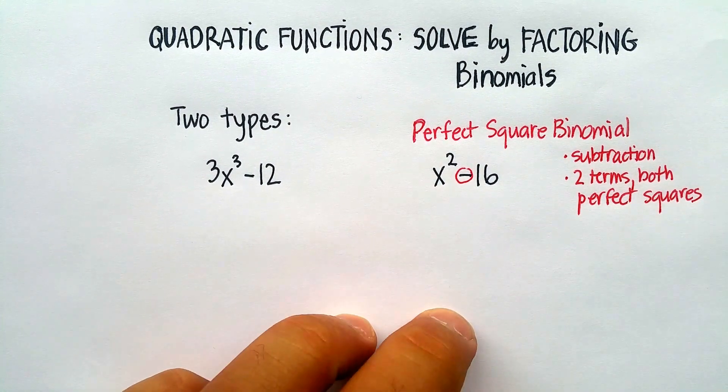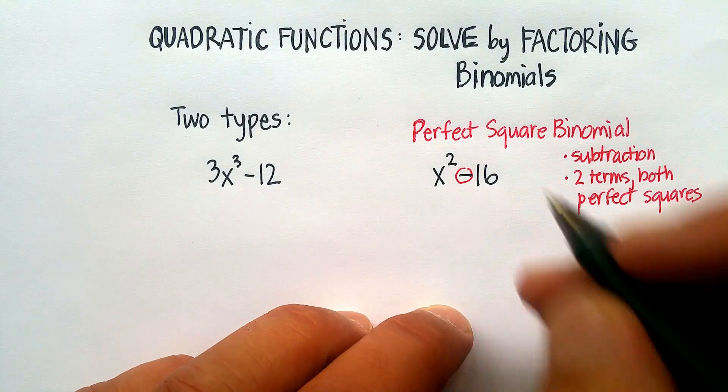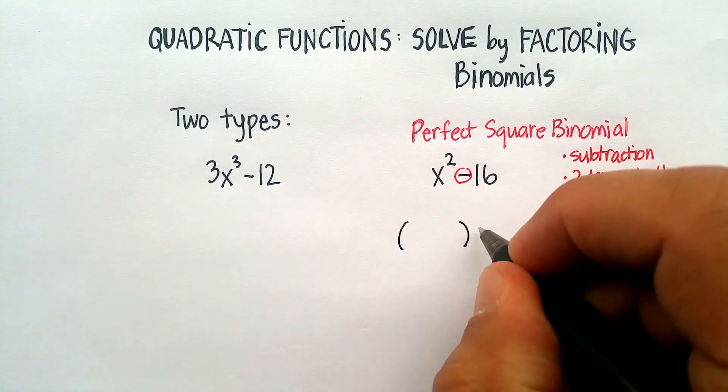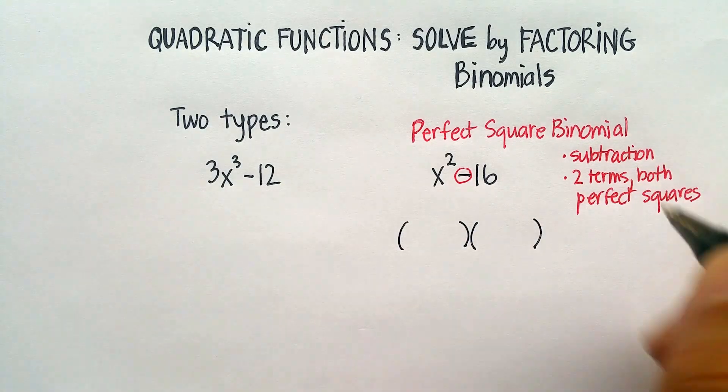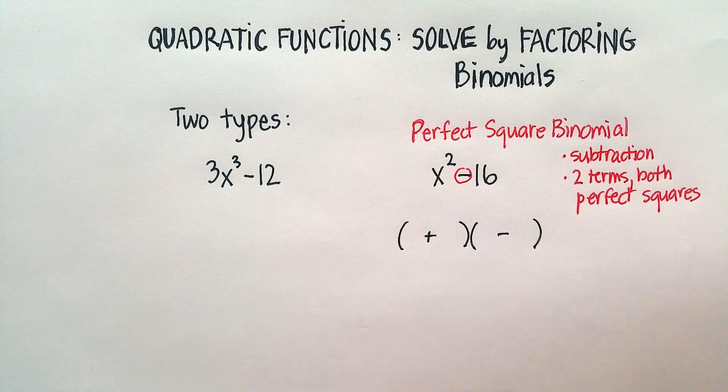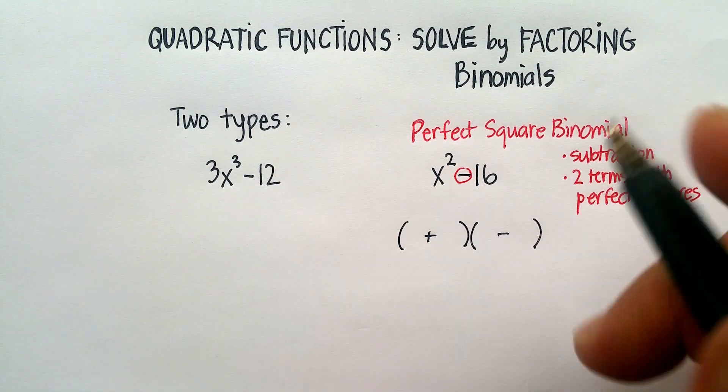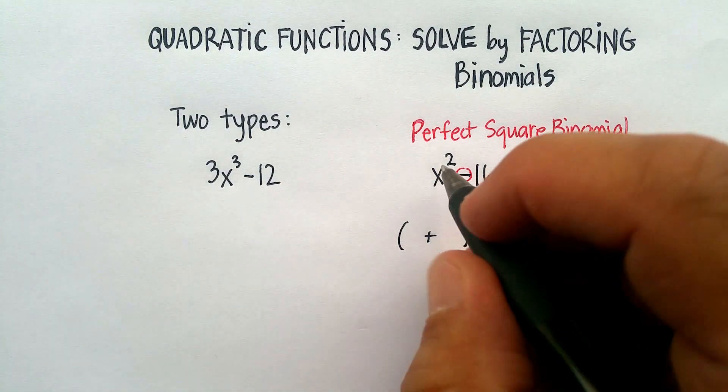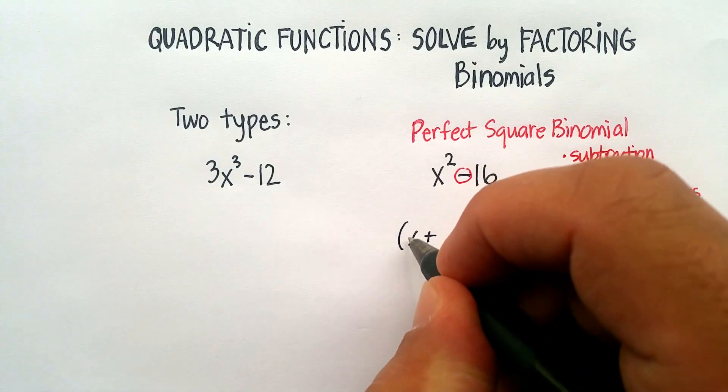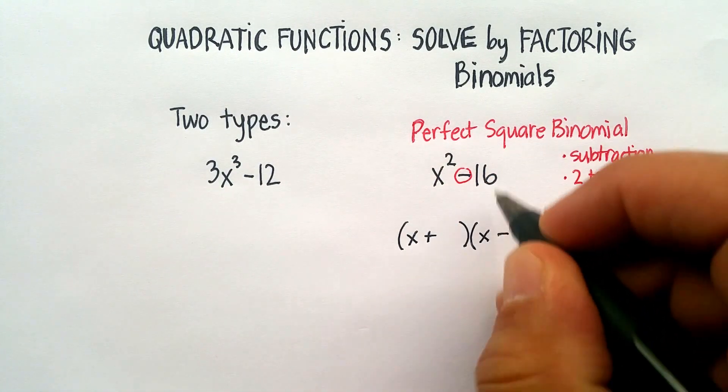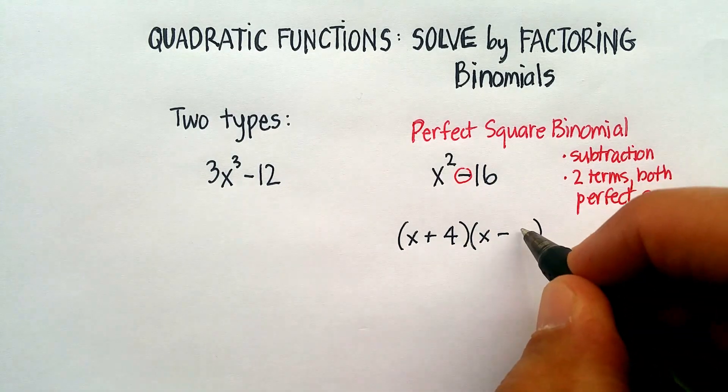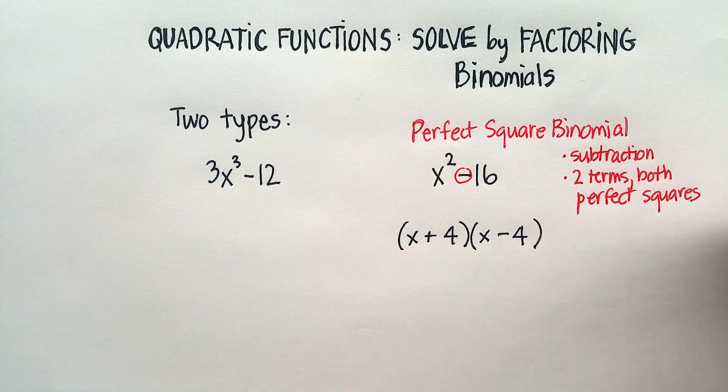When I see this I will just put down two different parentheses, plus and minus. Just trust me on this, we're just going to learn the pattern right now. Then we're going to take the perfect square root of each: x here and x in the front, so both in the front, and the 4 in the back, one here and one here.